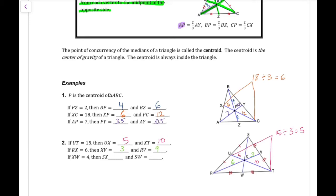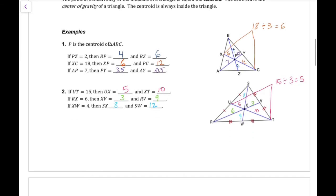Looking at the last side of the triangle. If XW is 4, that's the short side. That's one-third. Two-thirds would be twice as much. So XW would be 4. SX would be 8, and SW would be 12.